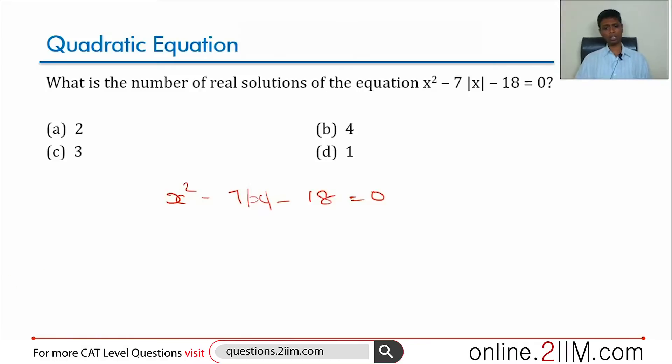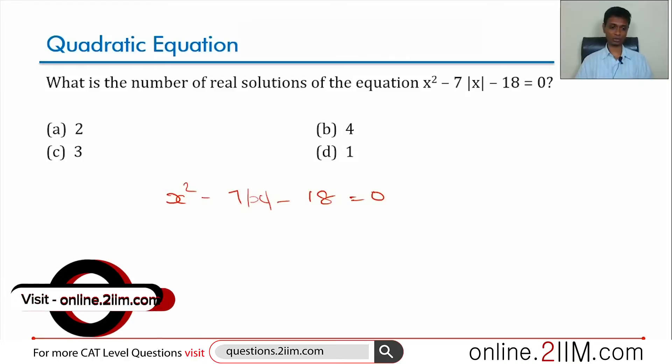We can do this in two ways. We can treat mod x like a function: mod x equals x when x is positive, mod x equals minus x when x is negative, and then simplify that. So solve for x greater than 0, x less than 0, two equations, simplify that and all that. There is another method which is a very simple idea.